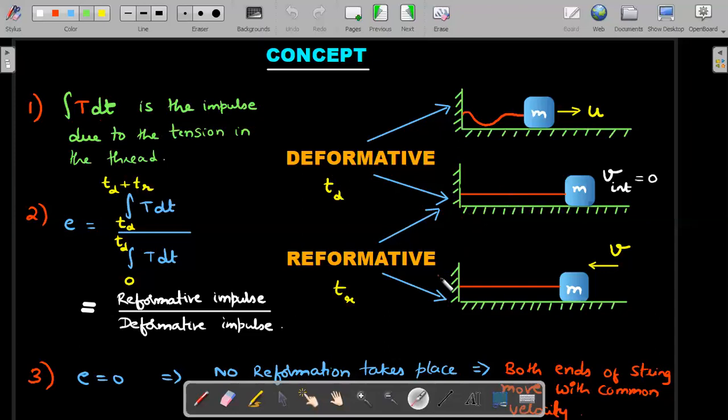Once the deformative period is over, something called the reformative period starts depending on the type of string you have taken. What is the reformative period? The tension that has stopped this block continues to act in order to ensure that particular string gets back to its original state. At macroscopic level, it might look inextensible, but at microscopic level there will be small deformations that are responsible for the tension in the thread. Those microscopic deformations may stay as is or may try to get reformed back to the original length of the string. That defines the reformative period.